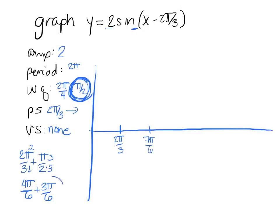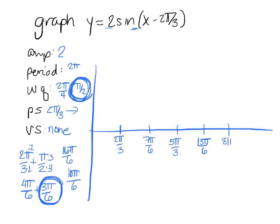I keep adding π over 2, which is 3π over 6. Adding another gives 10π over 6, which reduces to 5π over 3. Adding 3π over 6 again gives 13π over 6, which doesn't reduce. Then adding another 3π over 6 gives 16π over 6, which reduces to 8π over 3. So the critical points are at 2π/3, 7π/6, 5π/3, 13π/6, and 8π/3. The amplitude is 2, so I go up to 2 and down to negative 2.